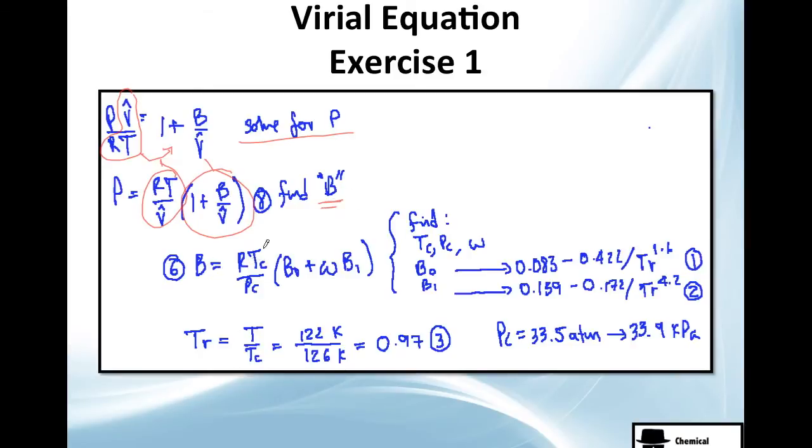B is equal to this times this. So from here we need to find Tc, which we already have as data, Pc we have as data, and the acentric factor we have as data. B0, on the other hand, we have this equation which only asks us Tr, we just need to know Tr, which is simple, which is T divided by Tc. And B1, same story, Tr. Of course there are different numbers.